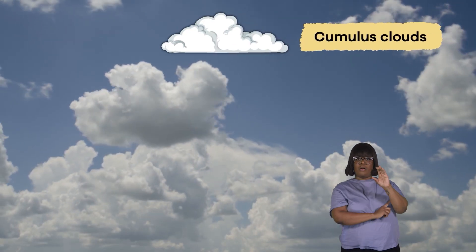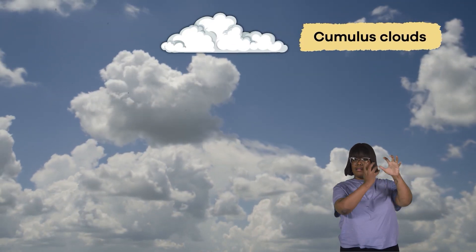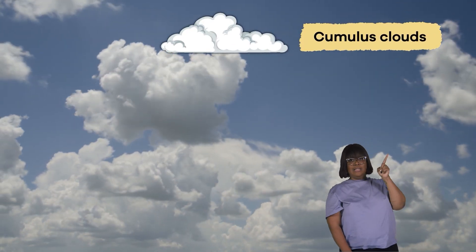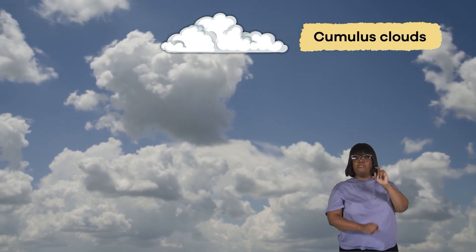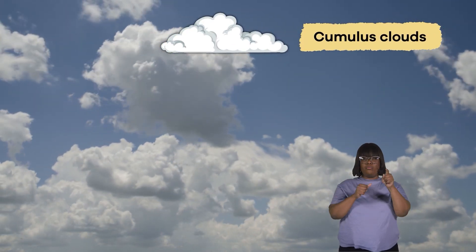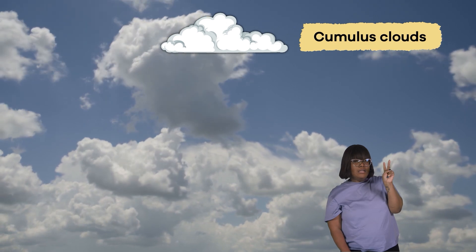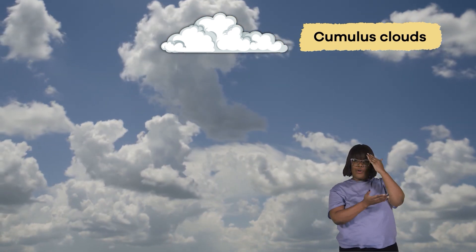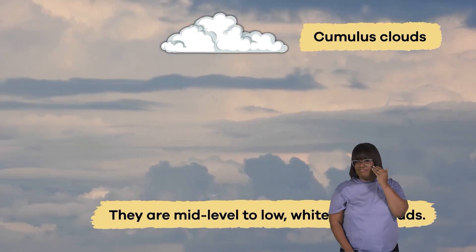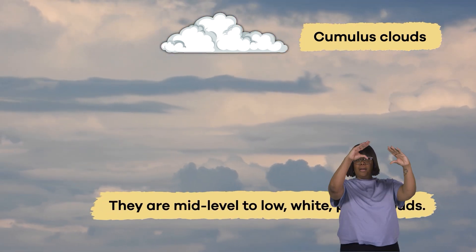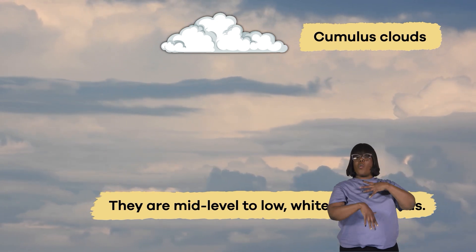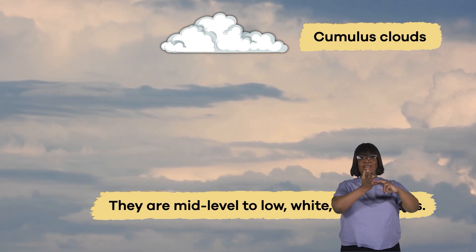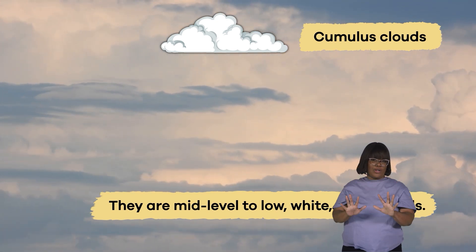Cumulus clouds are the ones you can look at and see pictures or shapes if you try hard enough. They are the mid-level to low, white, puffy clouds that indicate good weather.